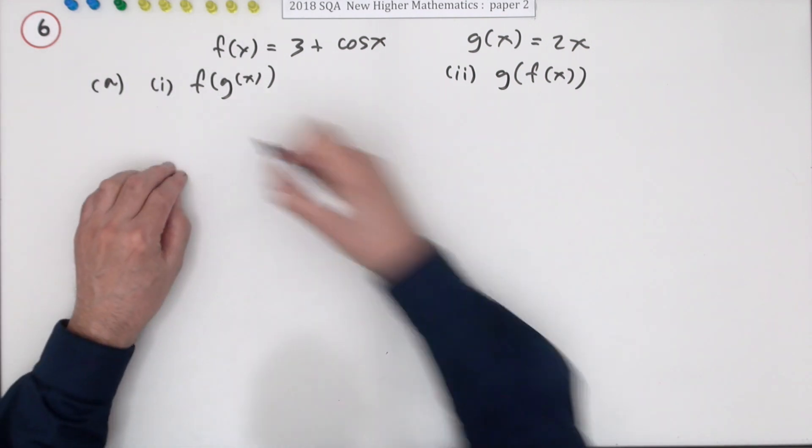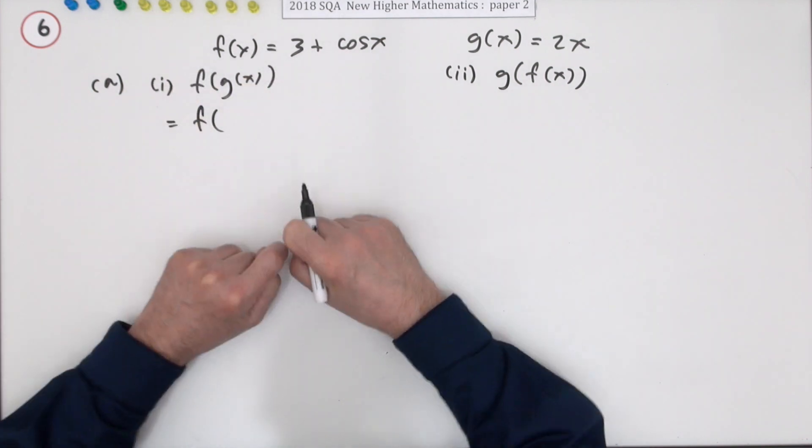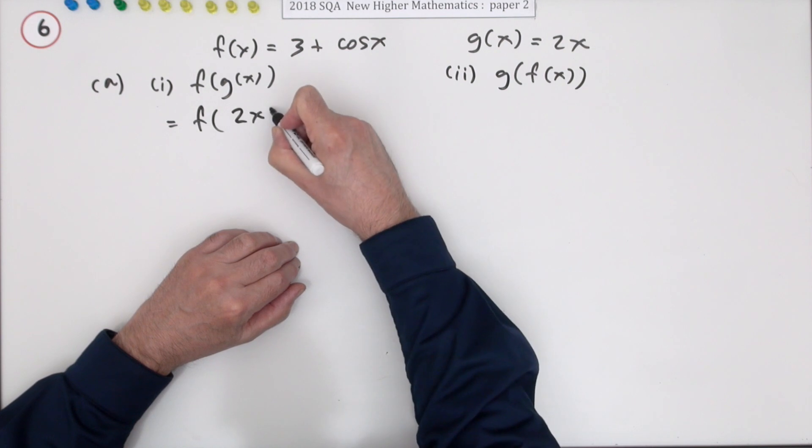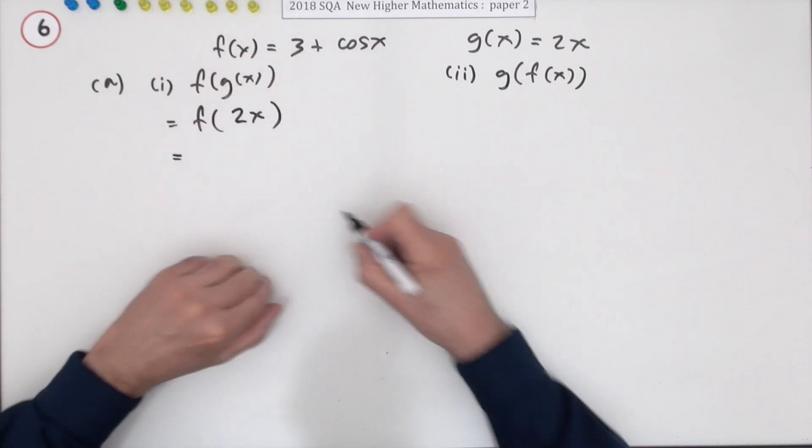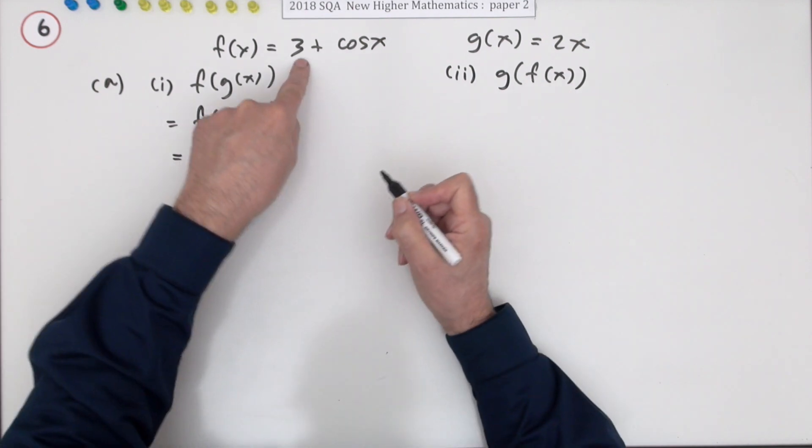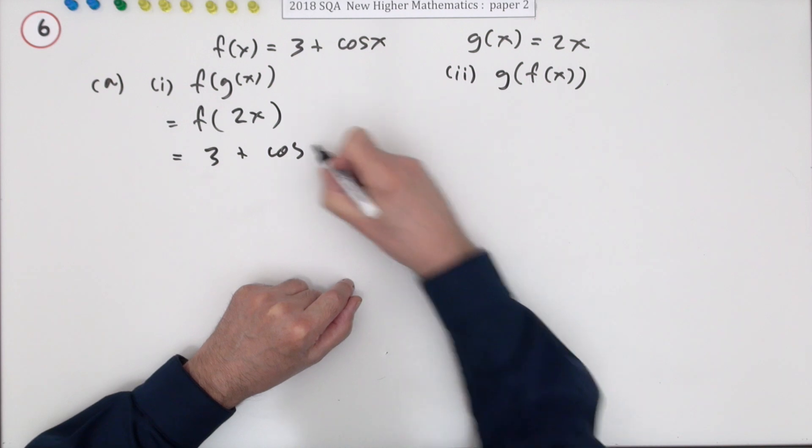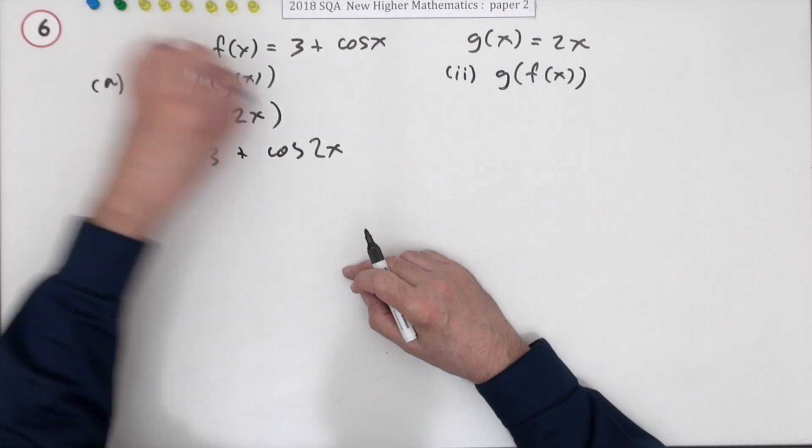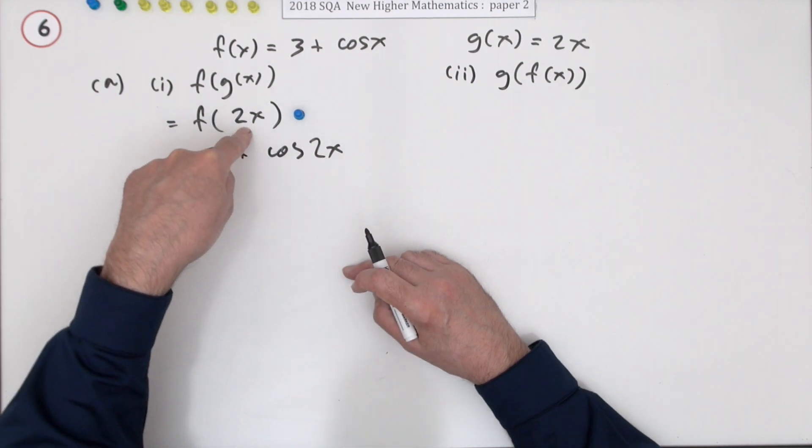The first part should be okay. What are these two functions of functions for these three marks? Well, f of g of x - you're going to feed in 2x. That means f does 3 plus cos of whatever you feed into it, which is 2x.